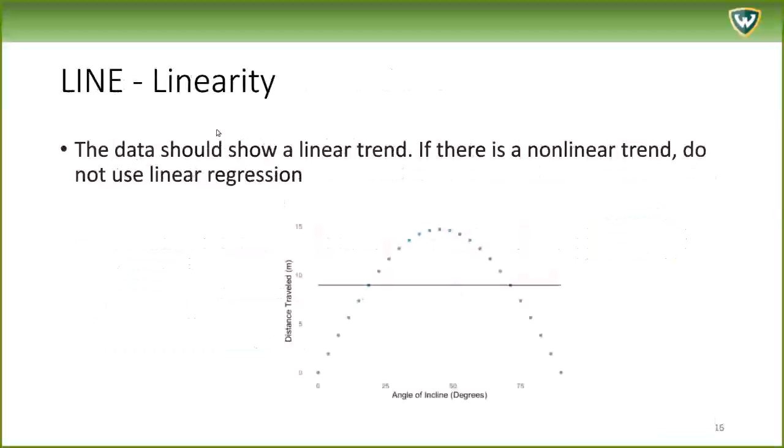LINE, linearity. The data should show a linear trend. If there's a non-linear trend, do not use linear regression. So if your data starts looking like this, linear regression is not appropriate. You can use some kind of related regression to model this, but we're not examining this in this course. There's a nice image in the book that has a picture of various problems with data that are not appropriate for linear regression.